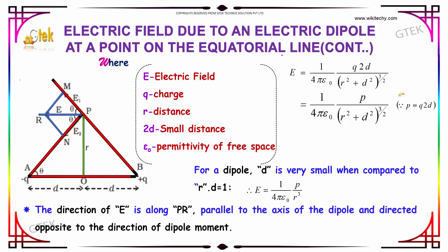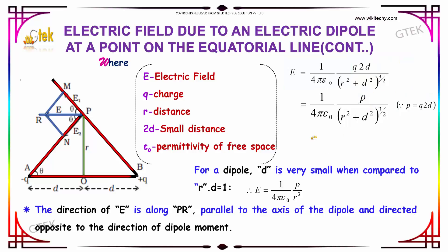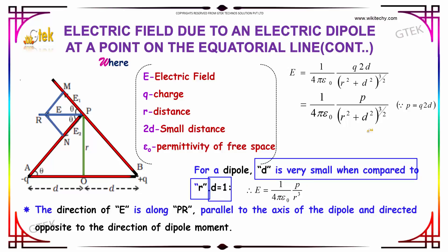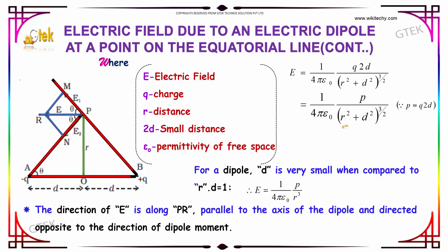The resultant electric field is E equal to 1 over 4π epsilon-naught, multiplied by Q times 2D divided by R squared plus D squared, whole to the power 3 over 2. Since the dipole moment P equals Q times 2D, we substitute P for Q times 2D. For a short dipole, D is very small compared to R, so D is neglected, giving E equal to 1 over 4π epsilon-naught, P divided by R cubed. The direction of E is along PR, parallel to the dipole axis, and directed opposite to the dipole moment.